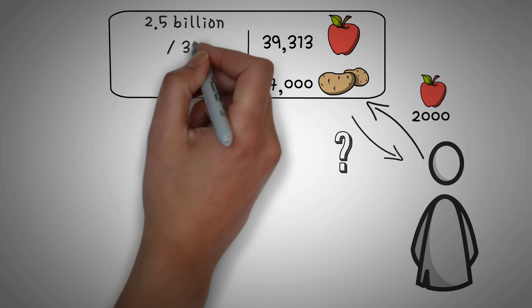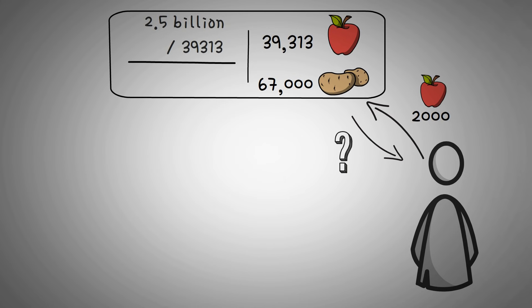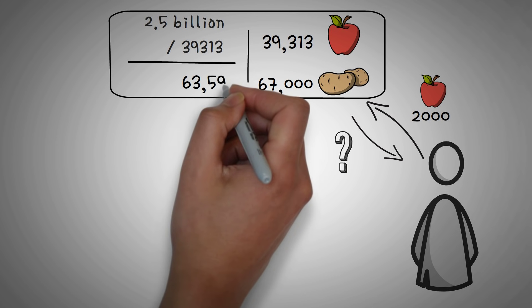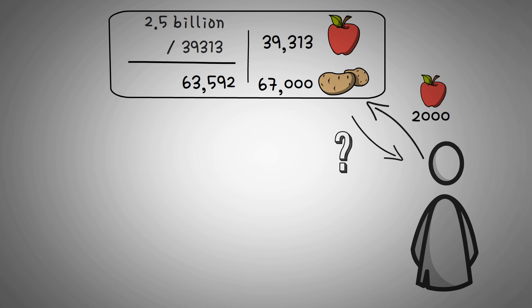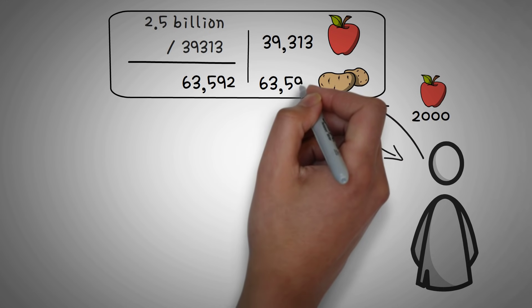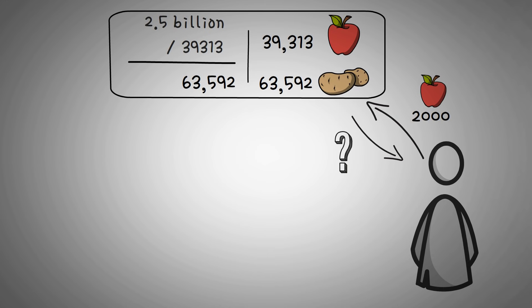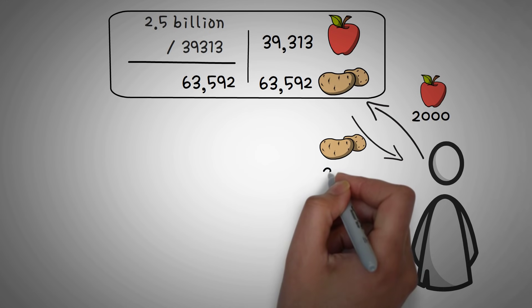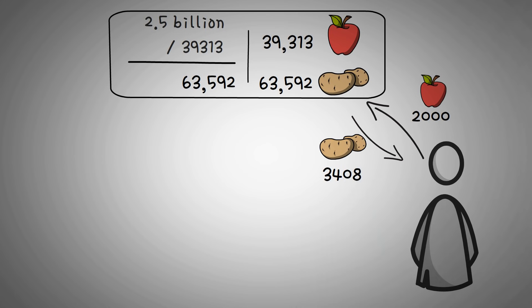So finishing the math, 2.5 billion divided by 39,313 gives us 63,592, which is how many potatoes there should be in the pool. Well right now, there's still 67,000 potatoes, and the pool only wants 63,592. So we take the difference, and we give it to the apple farmer, which is 3,408 potatoes.